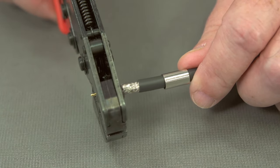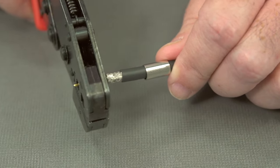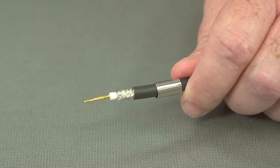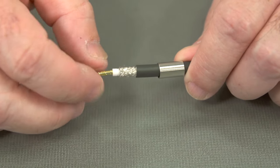Let's get ready to crimp it. If it's flush with the dielectric, give it a good squeeze. You can see it's attached.